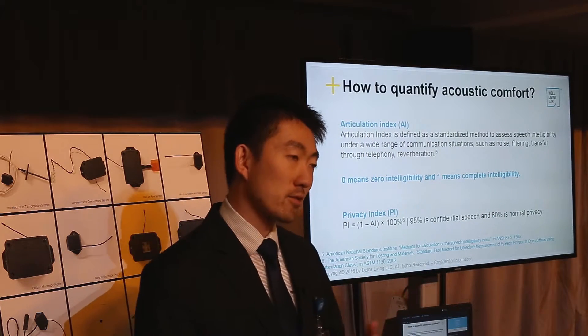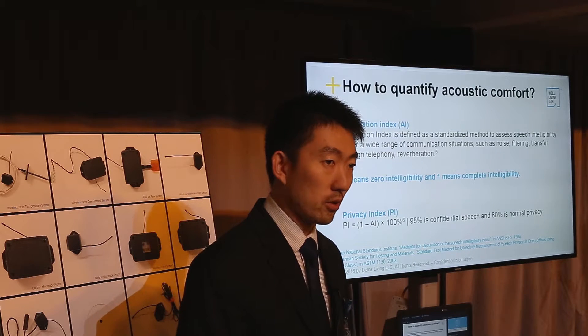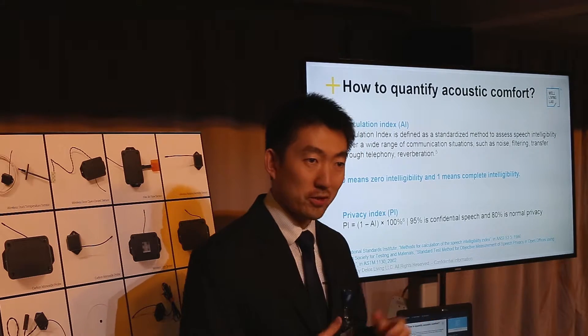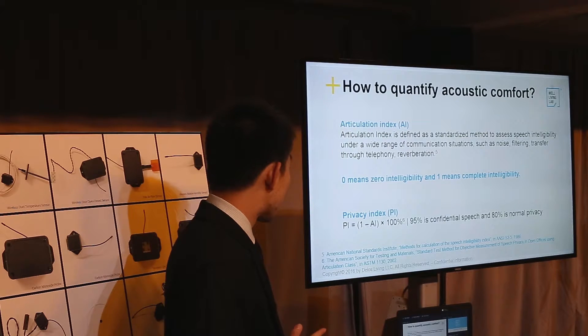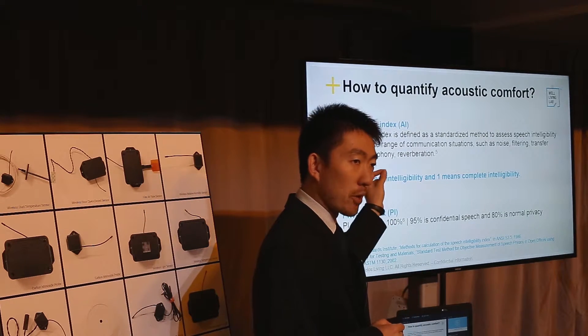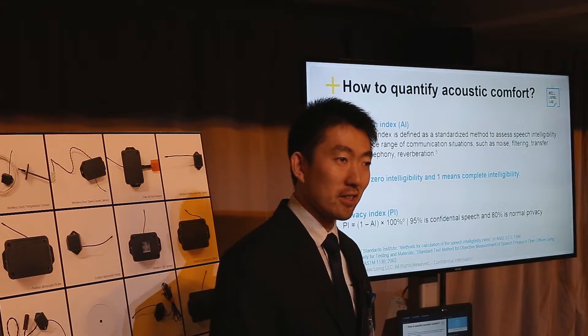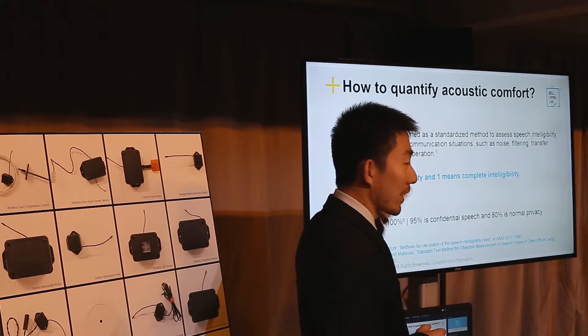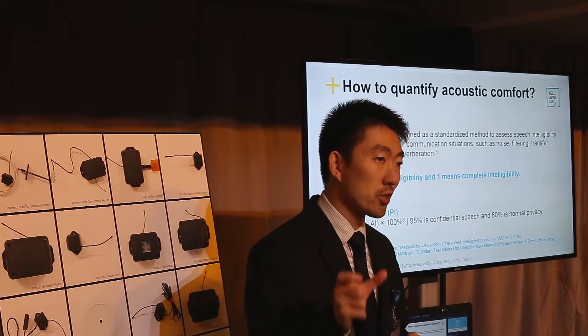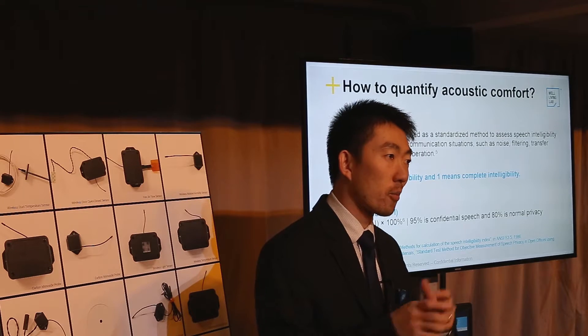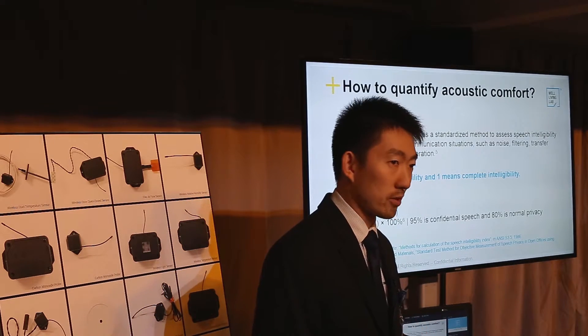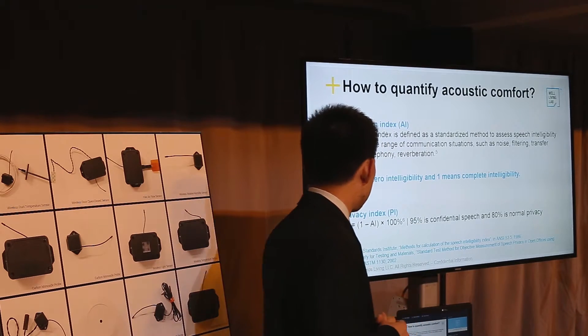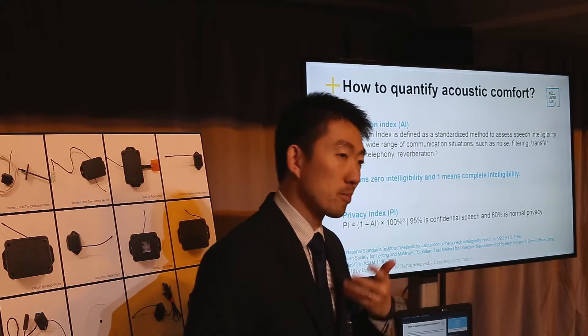There are more advanced or complicated criteria for evaluating acoustic comfort. Articulation index, AI - it's not artificial intelligence. It's very hard to really measure it, but there are scientific mathematical equations to calculate. It is defined as if you say 100 words, how many words you can hear clearly from that 100 words. If you can hear 90 out of 100 words very clearly, the articulation index is 90 or 0.9.